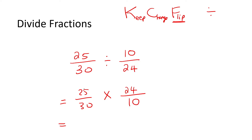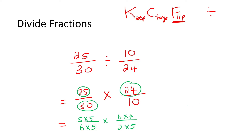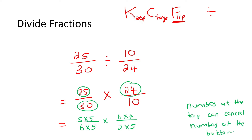So what we learned is that we can change numbers into their factors — for example, 25 into 5 times 5, 30 into 6 times 5, and 24 into 6 times 4. Numbers at the top can cancel numbers at the bottom. So this 6 cancels this 6, this 5 cancels this 5. All that we have left is a 4 at the top and a 2 at the bottom. What is 4 divided by 2? Two — and so there's our answer.